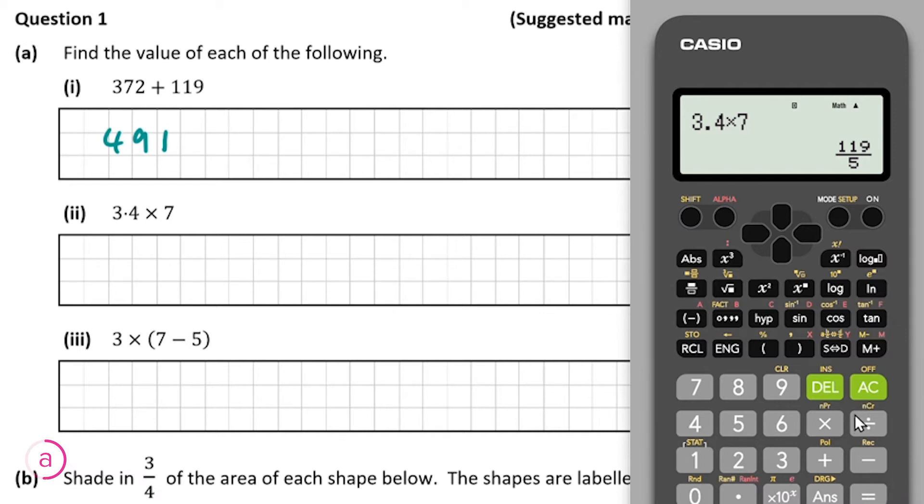So we're going to press this S and then the arrow to the D button, or in other words just the SD button, and pressing that will give you your answer in decimal form which is 23.8.